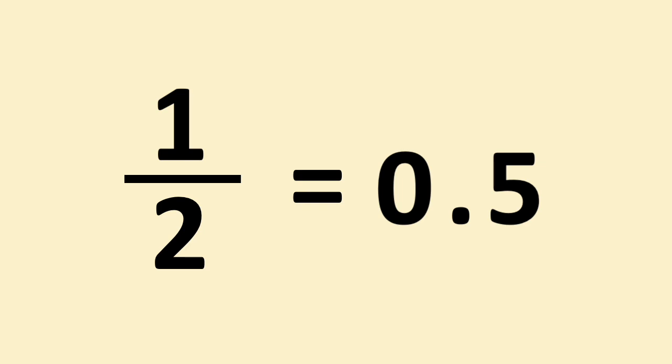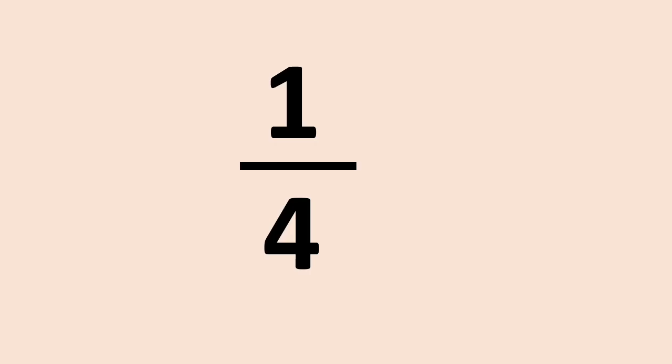Let's see another example. One quarter is the same as saying one divided by four. So, we divide the numerator, the top number, by the denominator, the bottom number.